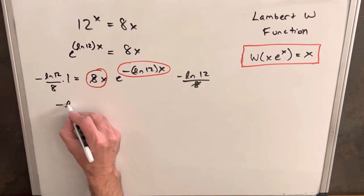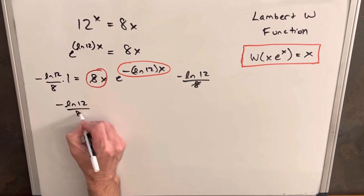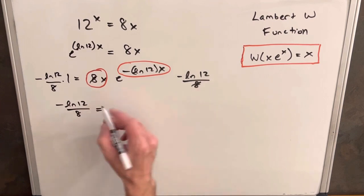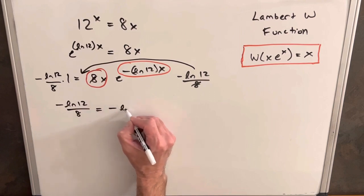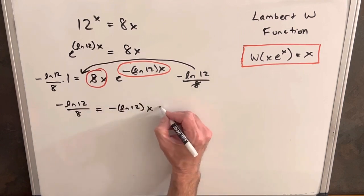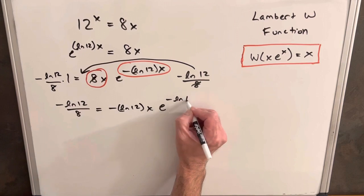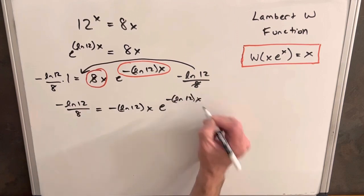We're going to have minus ln 12 over 8 equals this. We're going to bring this minus ln 12 over here, so we're going to have minus ln 12x times e to the minus ln 12x.